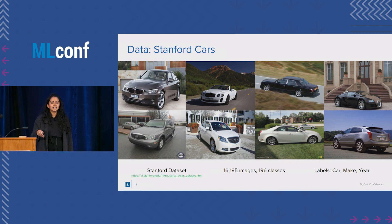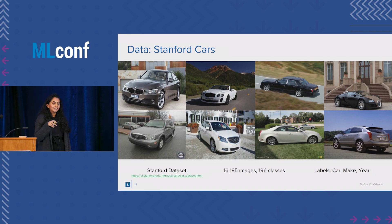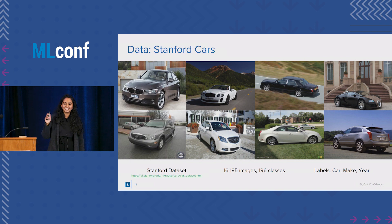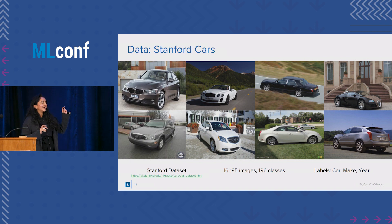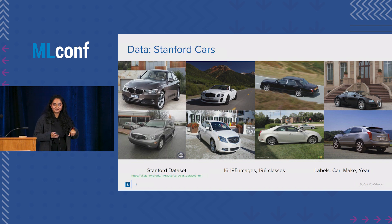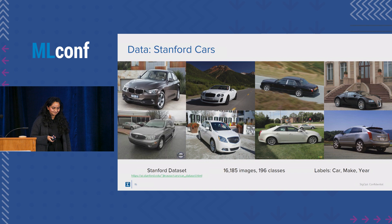What I mean by close proximity is that the dataset not only needs to classify a Honda Accord 2011, but also a Honda Accord 2012. There are very minute differences that need to be accurately identified.